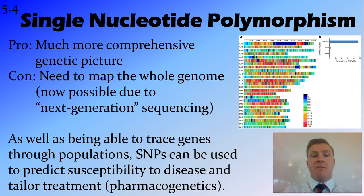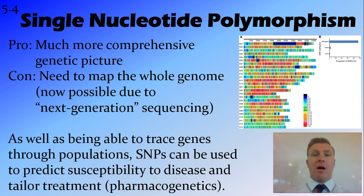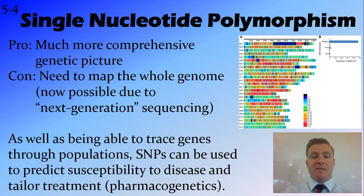The downside of SNPs is that you need to map the whole genome to use them, which is now possible because of next-generation sequencing — modern sequencing techniques. This gives us the benefit of being able to trace exactly where mutations came from through a population. You can look at people from different continents, modern and ancient people, and use statistical analysis to compare them — it's complicated, but computers handle that analysis.